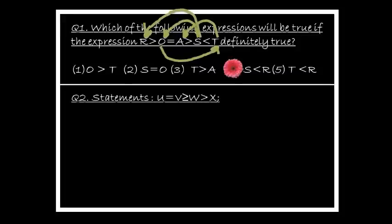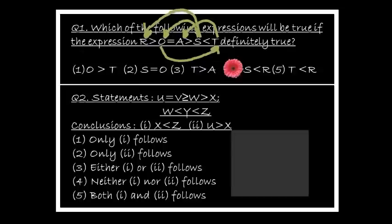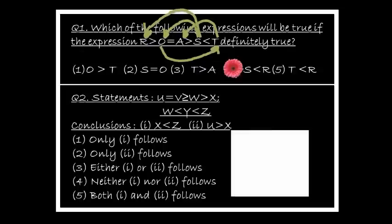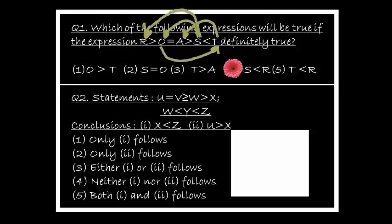Next question: two statements are given — statement one: e equal to v, greater than or equal to w, greater than x; statement two: w less than y less than z. Followed by two conclusions. First conclusion is x less than z. Since two statements are given, combine them using w as a key — w appears in both statements. From statement one: x less than w. Combined: x less than w less than y less than z.